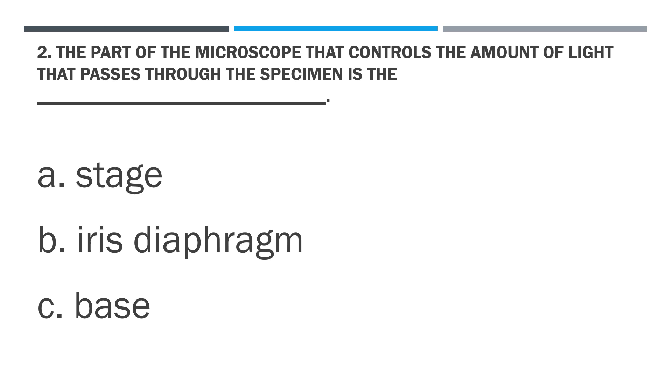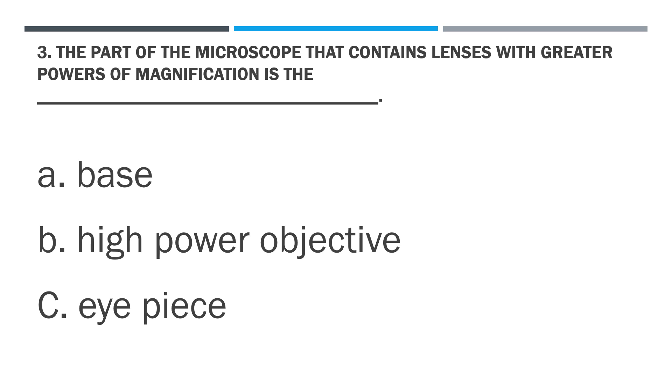Question 3: The part of the microscope that contains lenses with greater powers of magnification is the blank.